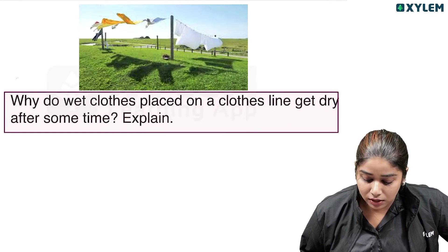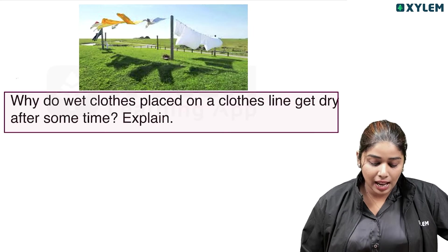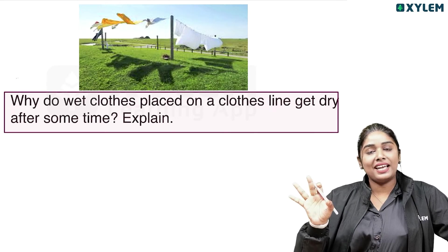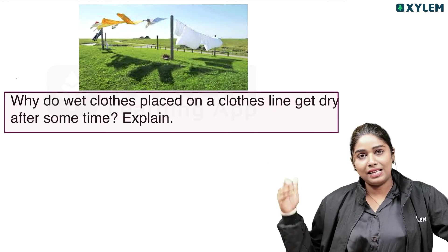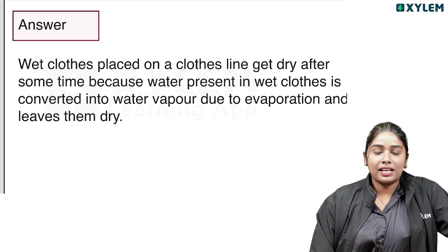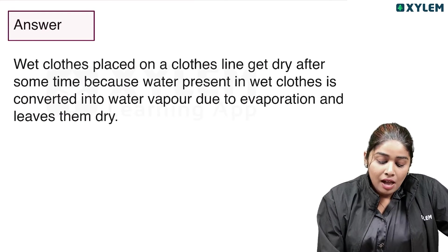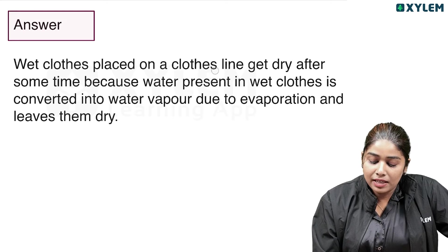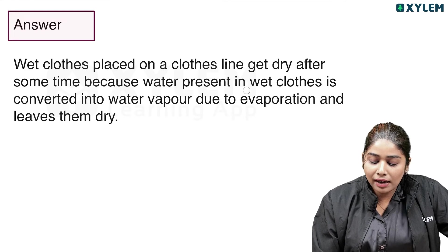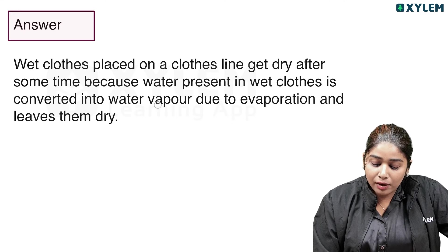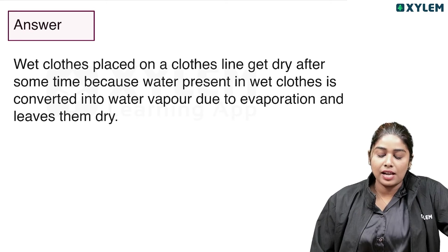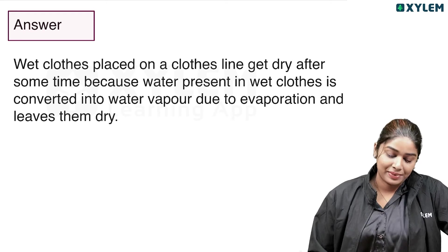Why do wet clothes placed on a clothesline get dry after some time? Wet cloth placed on the clothesline gets dry after some time because water present in the wet cloth is converted into water vapor due to evaporation and leaves the cloth dry.